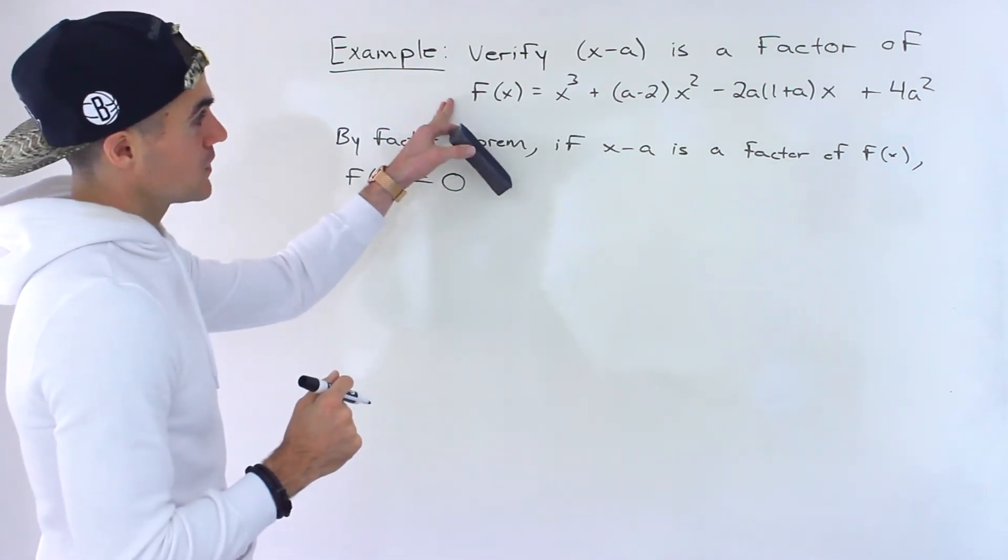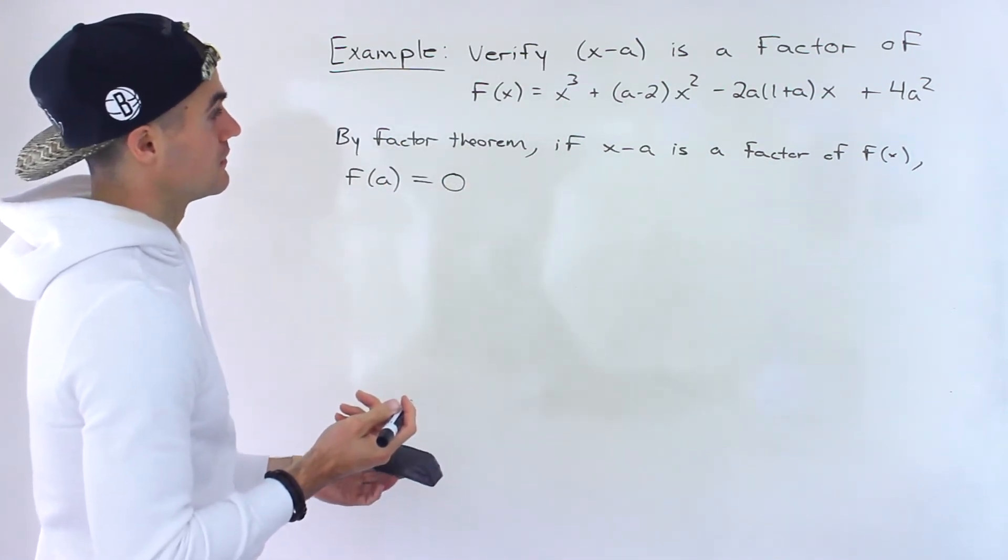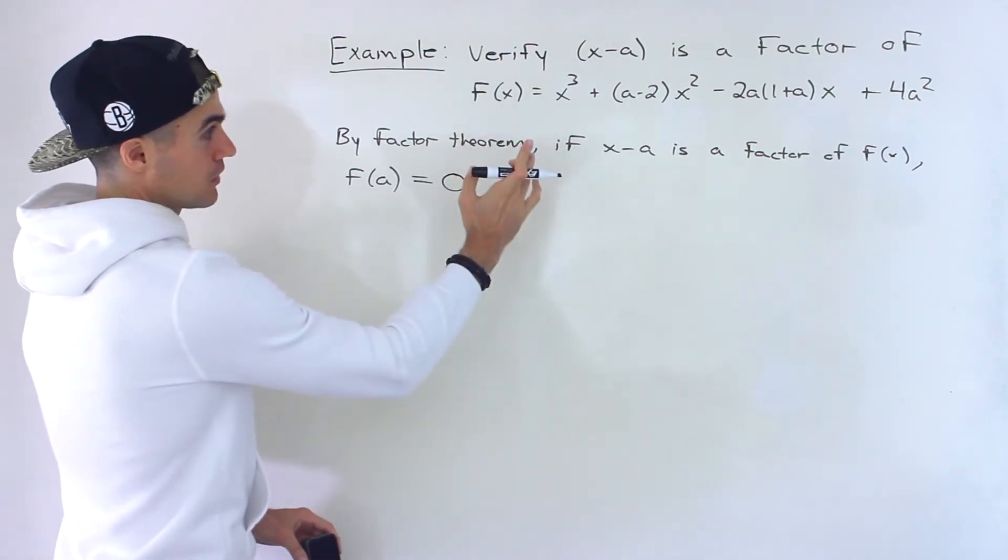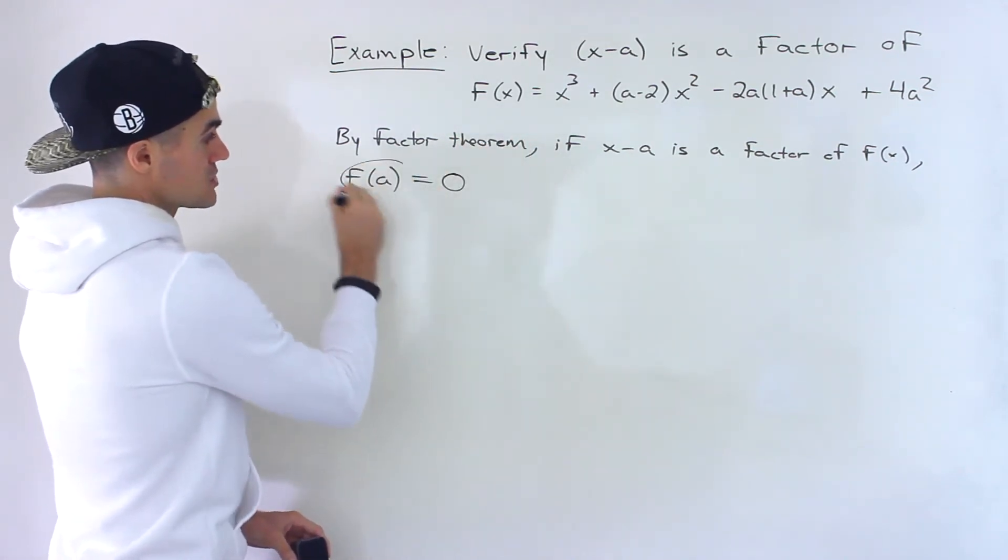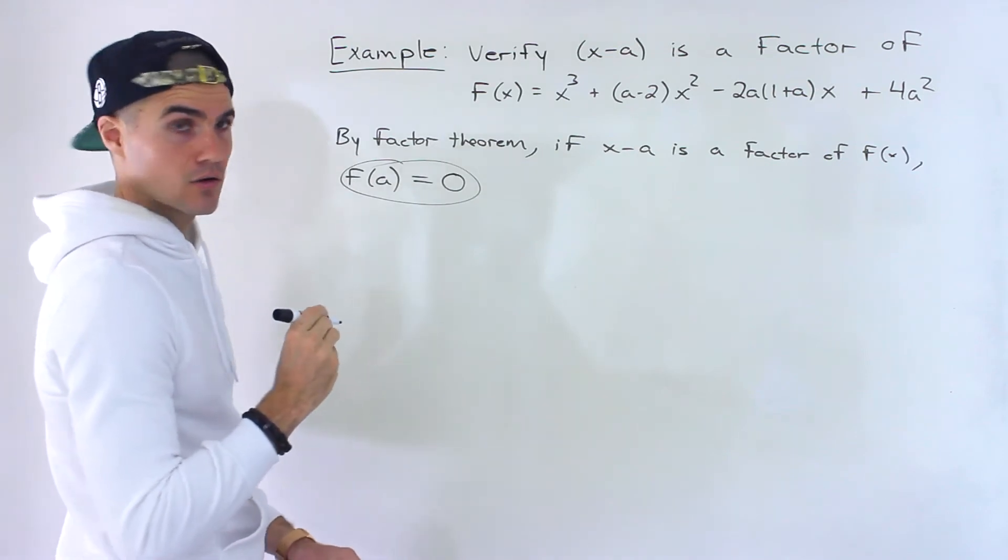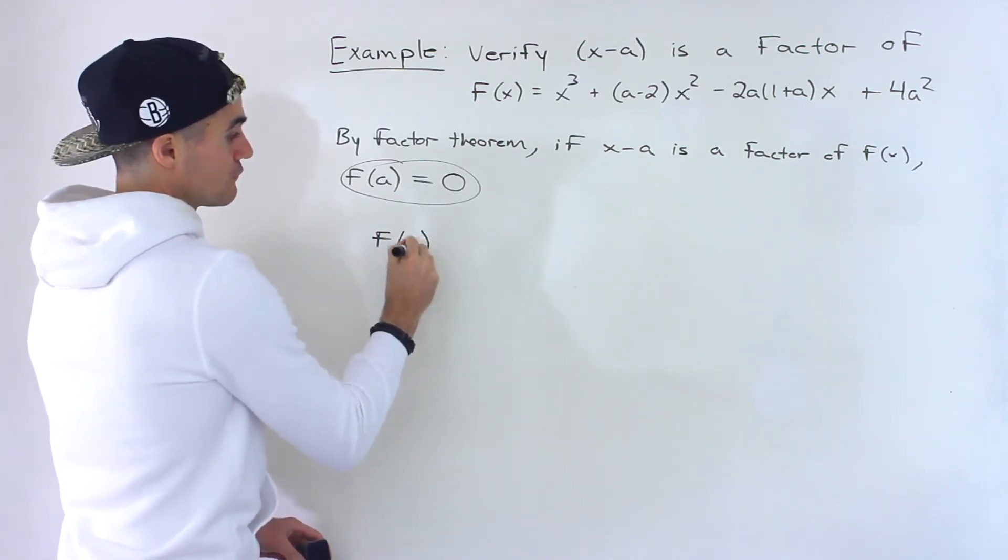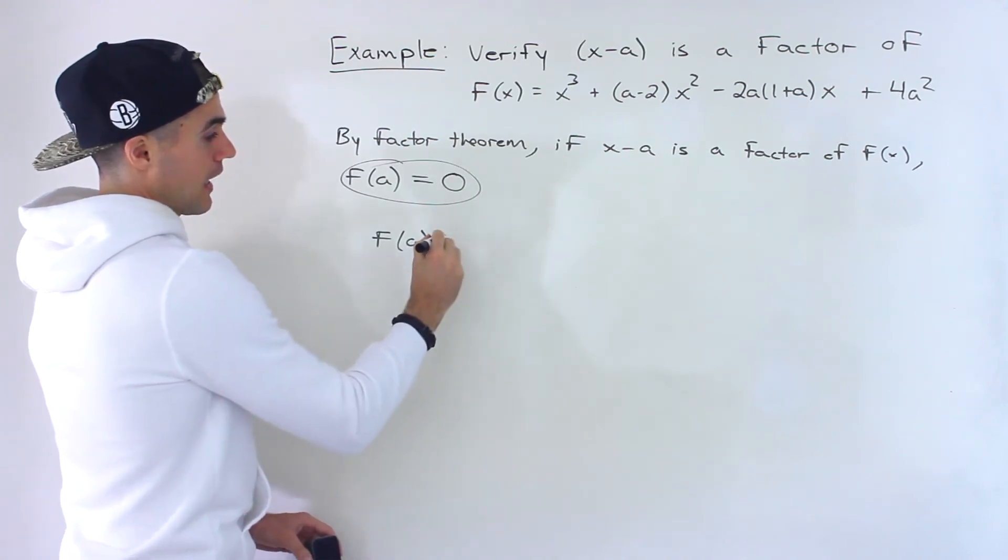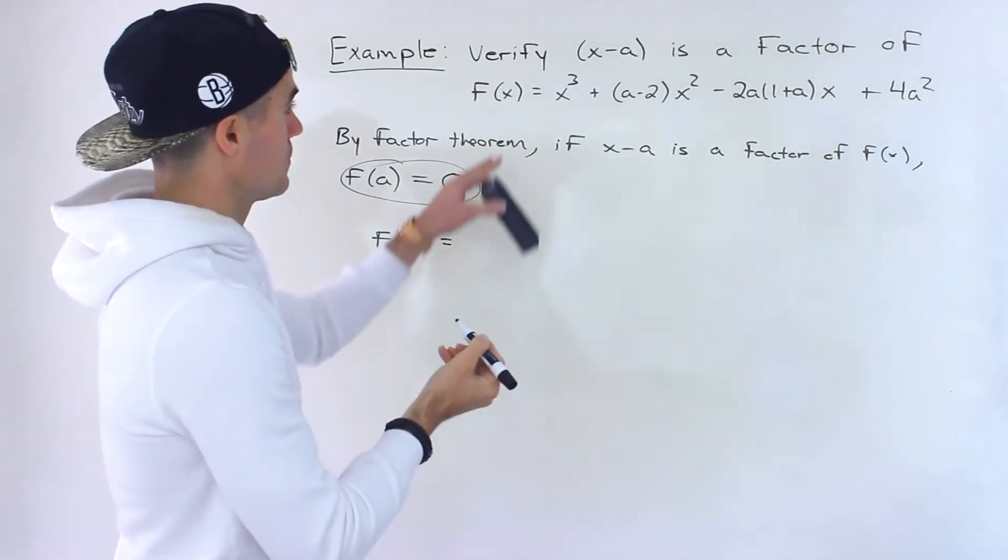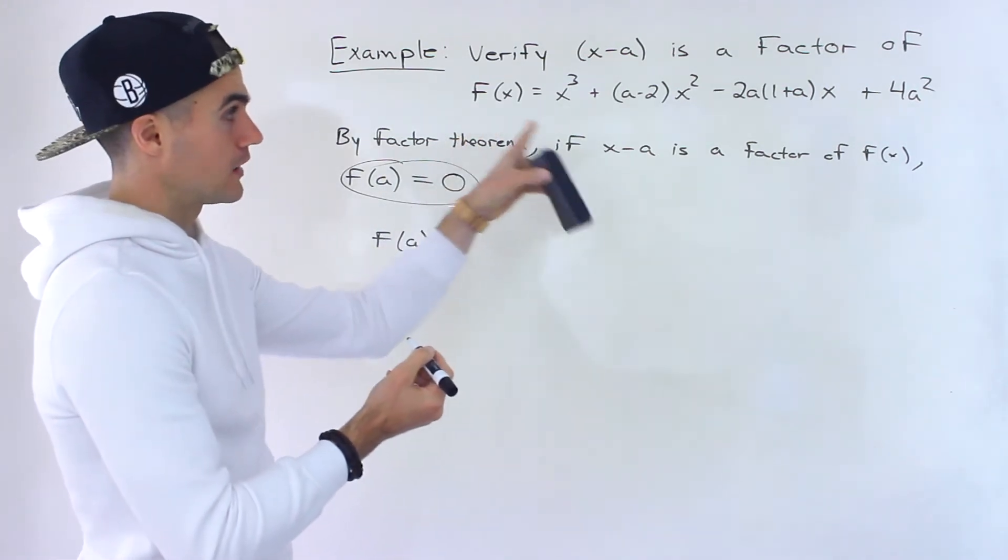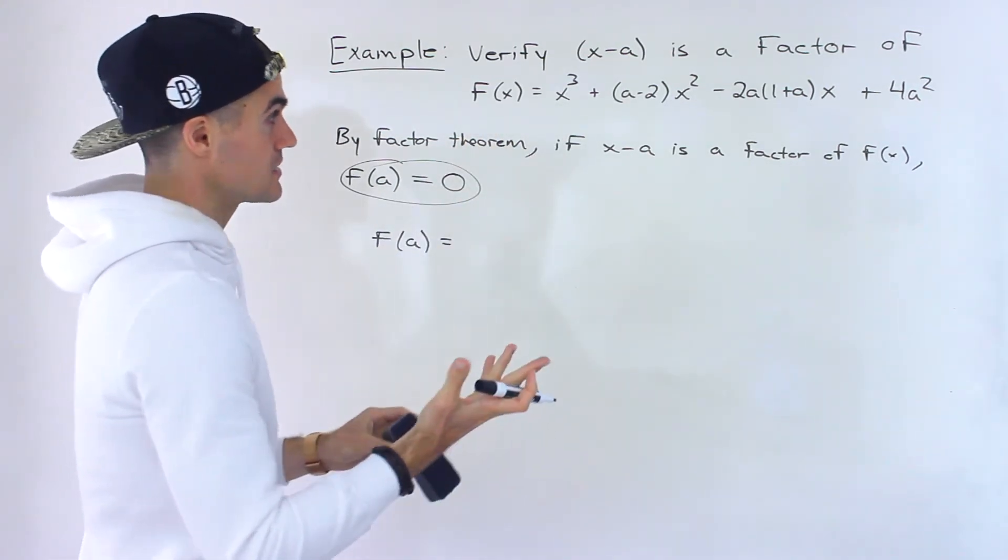And so going back to this question, the way we can verify that x minus a is a factor of this polynomial is just proving this over here. So we could figure out what is f of a going to be. And what we would do is we would just take the value a and plug it in for all the x values and then see what we can get.